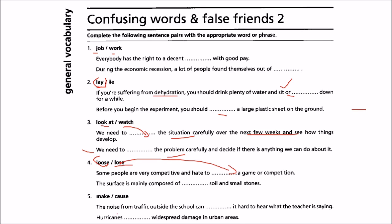Then make and cause. The noise from traffic outside the school can make it hard to hear what the teacher is saying — not 'cause', but 'make'. Hurricanes cause widespread damage in unknown areas because the cause of damage is hurricanes, so that is a 'cause'.